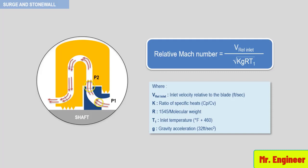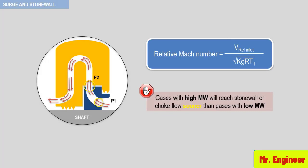Therefore, gases with high molecular weight will reach stonewall or choke flow sooner than gases with low molecular weights. This is the reason why the flow range of compressors processing high molecular weight gases is always less than the flow range for compressors processing low molecular weight gases.